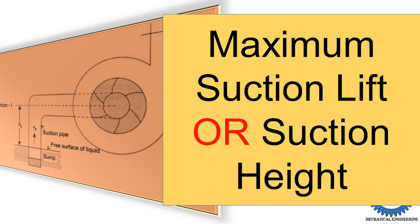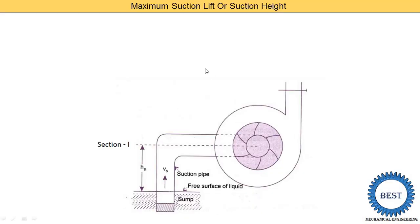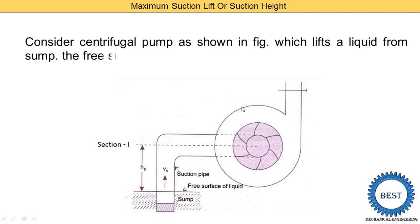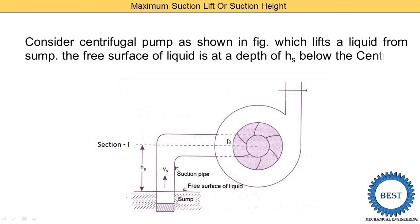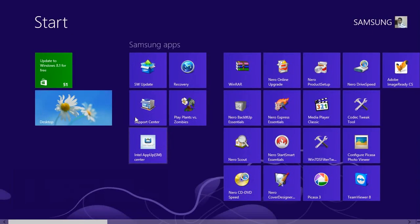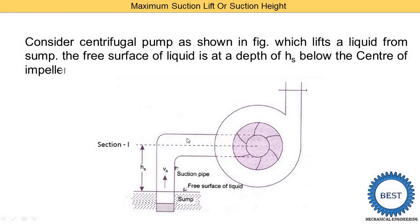We derive these equations by applying the energy equations. These are the figures of a centrifugal pump. This is the centrifugal pump, this is the impeller, this is the suction pipe, and this is the height of the suction pipe Hs. Hs means the distance from the water level in the sump to the center of the pump. Vs is the velocity of the water in the suction pipe.